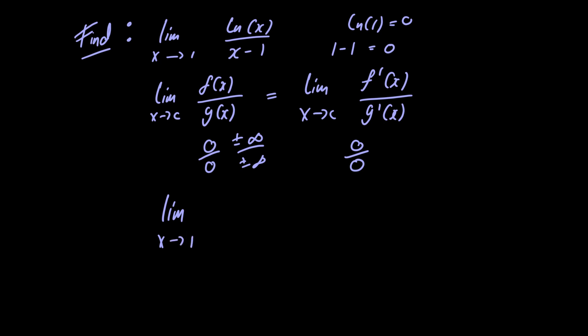The derivative of the natural logarithm of x is just 1 over x and the derivative of x minus 1 is just 1. This simplifies to the limit as x approaches 1 of 1 over x and now we can just go ahead and let x equal 1 as we're no longer dividing by 0 so we just have 1.